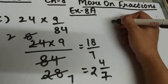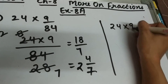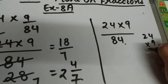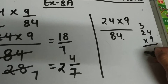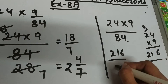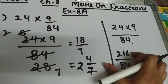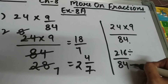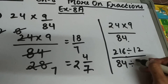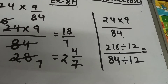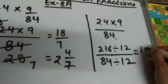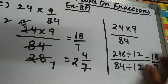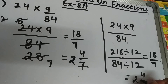Alternatively, we can multiply 24 and 9 directly first. So 24 multiplied by 9 is 216, giving us 216 upon 84. Now reduce this fraction into lowest terms. The HCF of 216 and 84 is 12, so we divide both numerator and denominator by 12. After dividing, we get 216 divided by 12 is 18 and 84 divided by 12 is 7. Now convert this improper fraction into a mixed fraction: this will be 2 and 4 upon 7.